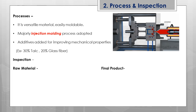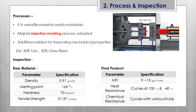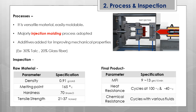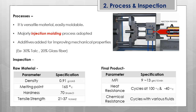For inspection, there are two types: raw material level and final product level. At the raw material level, key properties include density of 0.91, a high melting point of 165°C — one of the highest among thermoplastics — hardness of 70 Shore, and tensile resistance of 21 to 37. For the final product, the melt flow index (MFI) varies from 9 to 13 depending on additives added. Heat resistance testing involves exposing the product to 100°C and minus 40°C for three to five hours in multiple cycles, then evaluating cracking and surface conditions.